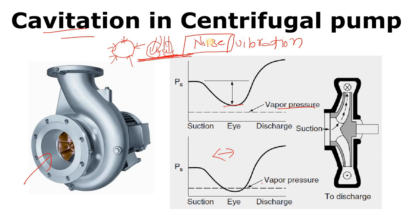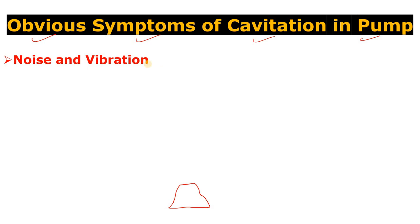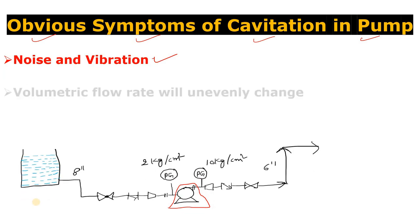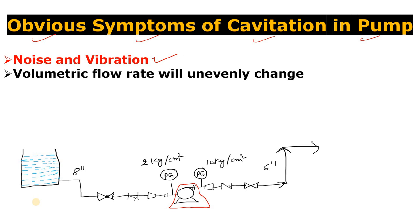So if you see noise and vibration from the centrifugal pump, you have to check the other parameters as well — the other symptoms. The second symptom is that the volumetric flow rate will unevenly change.